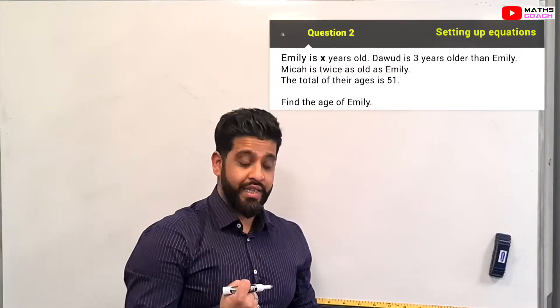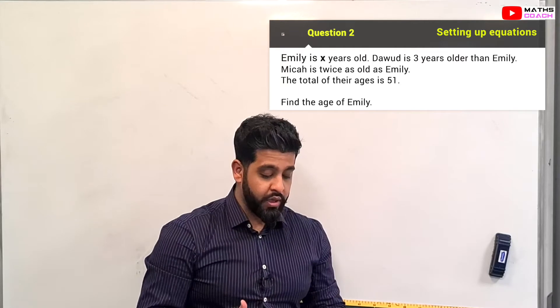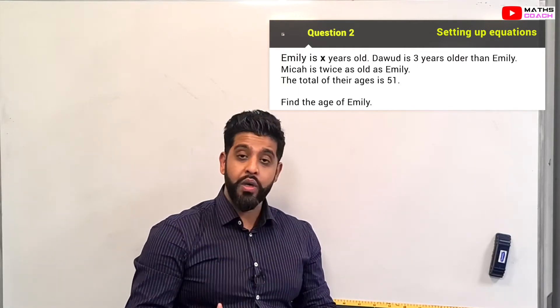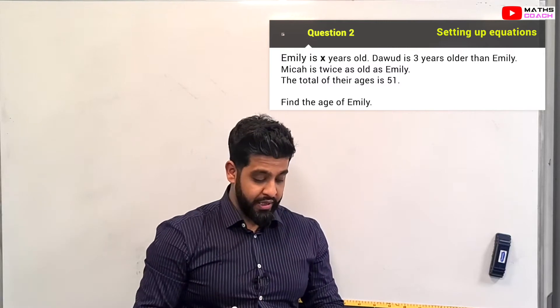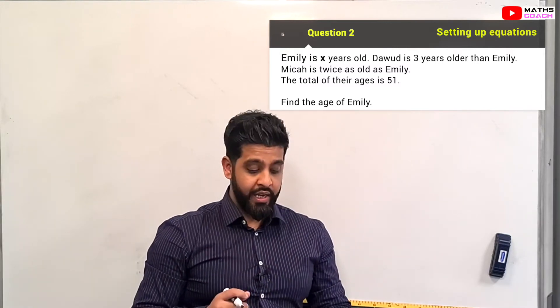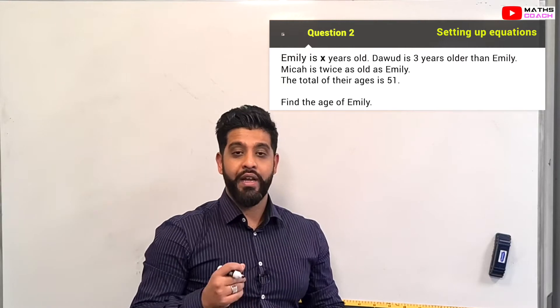Let's have a look at our next question. Emily is X years old. Dawood is 3 years older than Emily, and Micah is twice as old as Emily. The total of the ages is 51. Find the age of Emily.